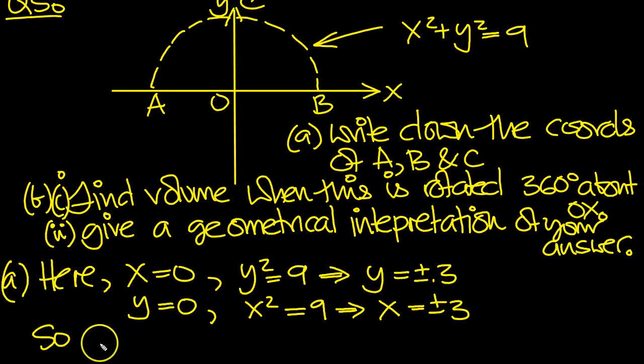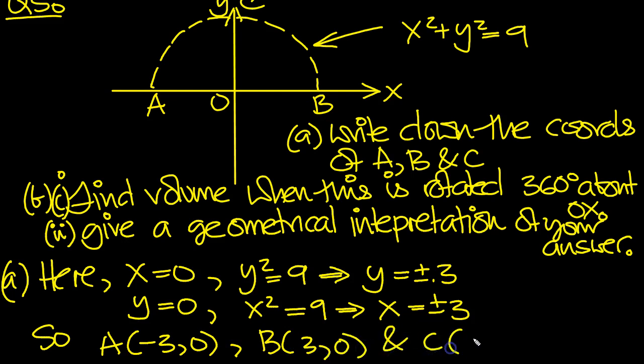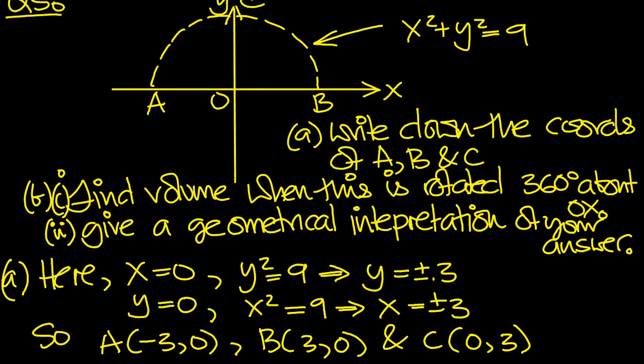So A will have coordinates -3, 0. B will have coordinates 3 and 0. And C has coordinates 0 on the x and 3 on the y. You could write this down directly simply by observing that this is the radius squared, so the radius is 3 units. You could observe that directly and just write down these three coordinates very quickly.